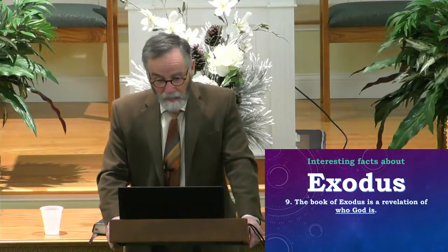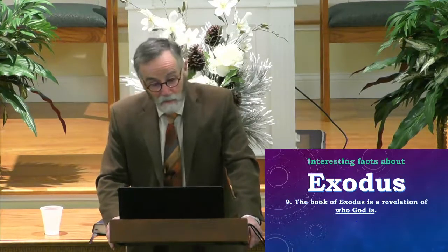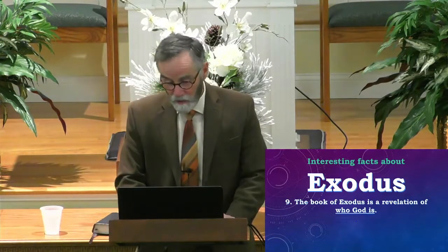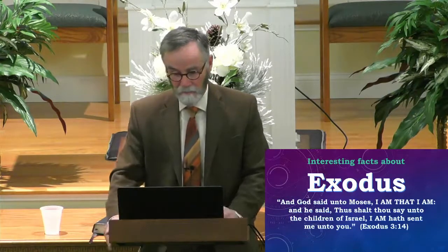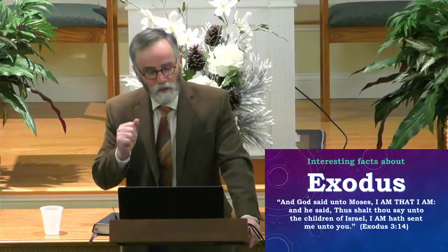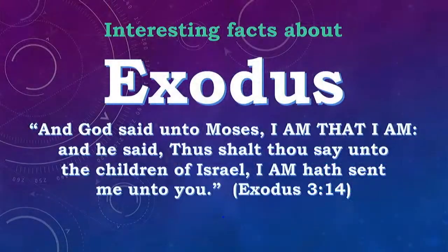The book of Exodus is also a book about God — in fact, every book in the Bible is about God. The book of Exodus is a unique revelation of who God is. Early on in this book, we have a revelation of God's special name that he identified himself to his covenant people Israel — the great I AM. In Exodus 3:14, 'And God said to Moses, I AM THAT I AM. Thus shalt thou say unto the children of Israel, I AM hath sent me unto you.'